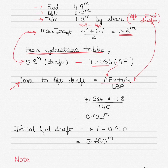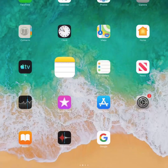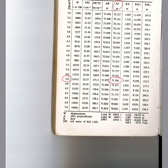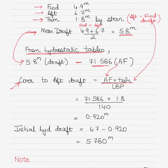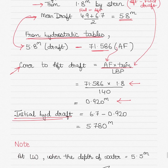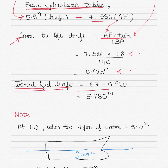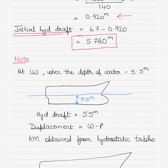The length between perpendiculars (LBP) is found at the bottom of the hydrostatic tables and is 140 meters. Using this, you can calculate the correction value and apply it to the mean draft to get the initial hydrostatic draft, which in this case comes out to 5.780 meters.